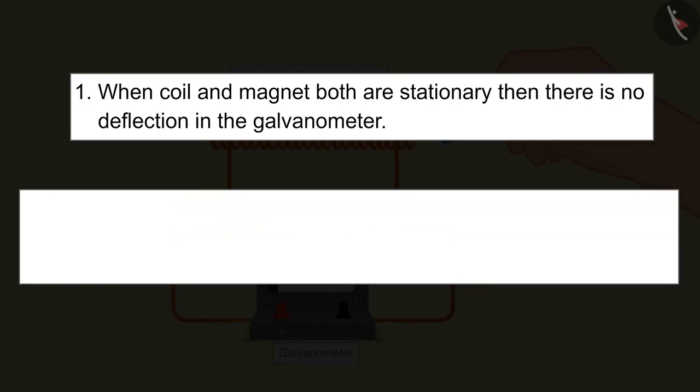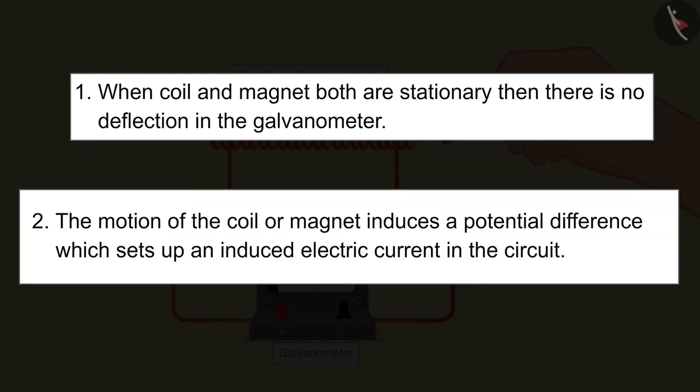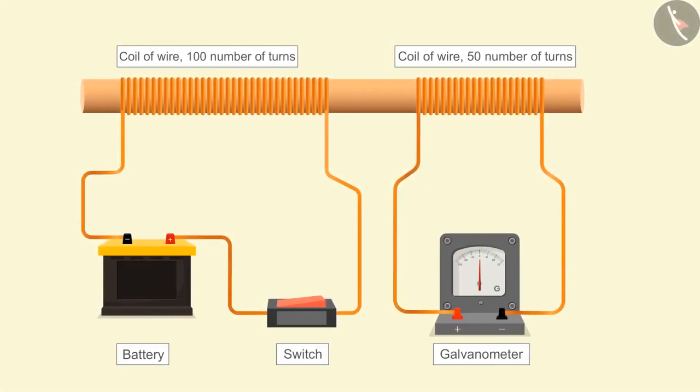The motion of the coil or magnet induces a potential difference which sets up an induced electric current in the circuit. Let's take this activity one step ahead.